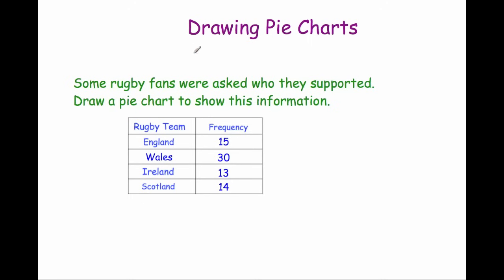Hi, welcome to this Corberman's video on drawing pie charts. In this video we're going to look at how to draw a pie chart for some information. Here we've got a question: some Rugby fans were asked who they supported. Draw a pie chart to show this information. We've got England with 15 fans, Wales with 30 fans, Ireland with 13 fans, and Scotland with 14 fans.